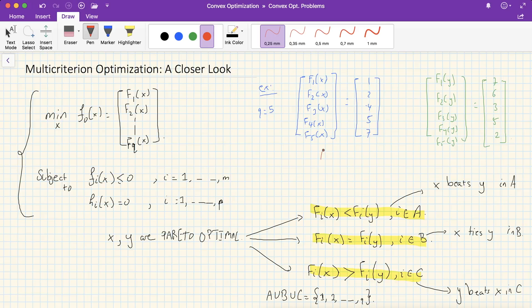2 is less than 6, 4 is less than 3, the indices where x beats y are 1, 2, and 3. The set B where x ties with y is 4, because here we've got a 5, here we've got a 5, so B is 4, and C contains only 5, where y beats x. So that's just a small example.